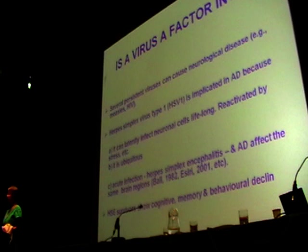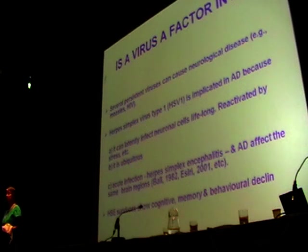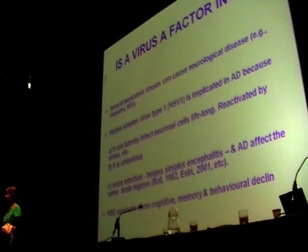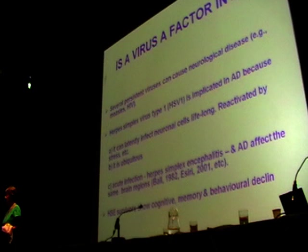There are several persistent viruses which can cause neurological disease; the best known are probably HIV and measles. And herpes simplex virus type 1 is implicated because it can latently infect neural cells, and once a person is infected, it stays lifelong, lying latent in the trigeminal ganglia — the peripheral nervous system. Also, it's ubiquitous. In acute infection, the regions mainly affected in herpes encephalitis are very similar to those mainly affected in Alzheimer's disease. And survivors of herpes encephalitis show cognitive, memory, and behavioural changes.